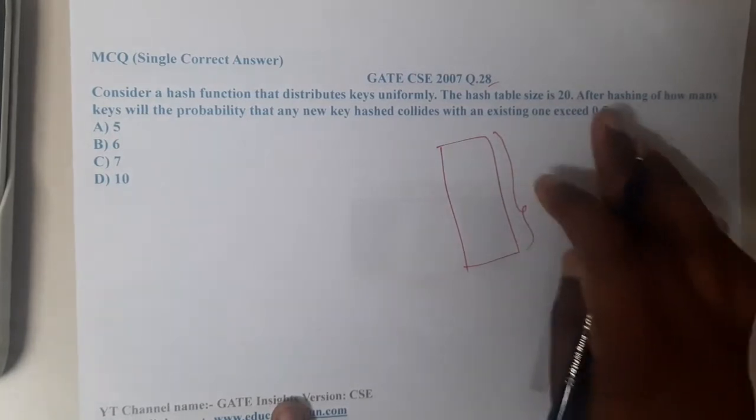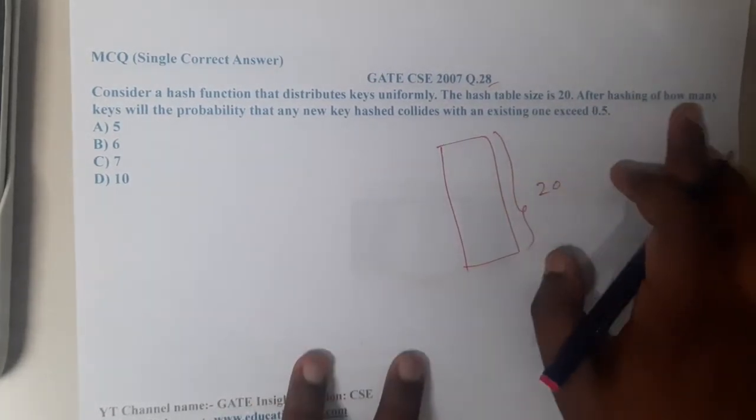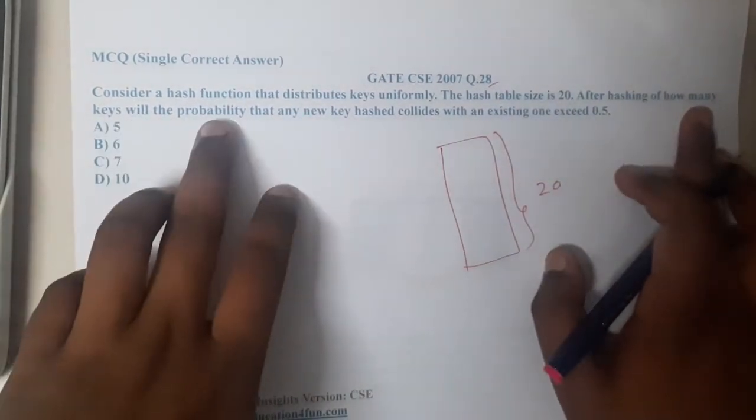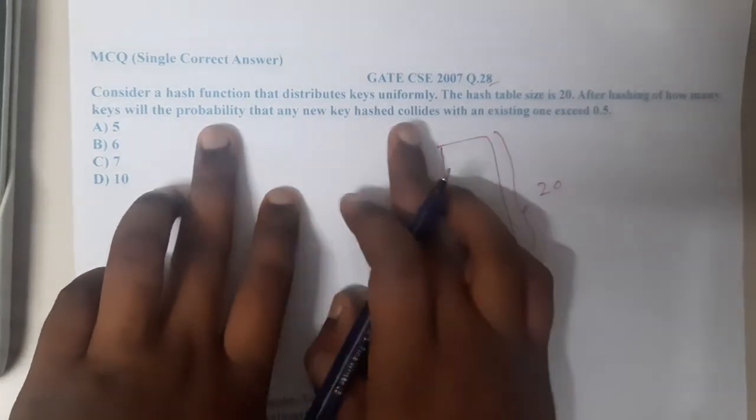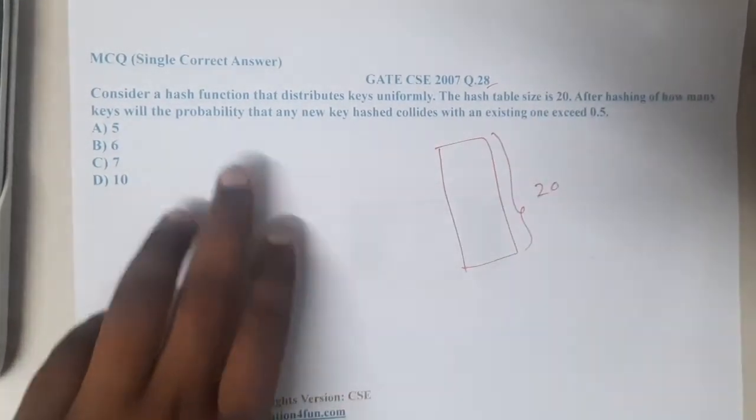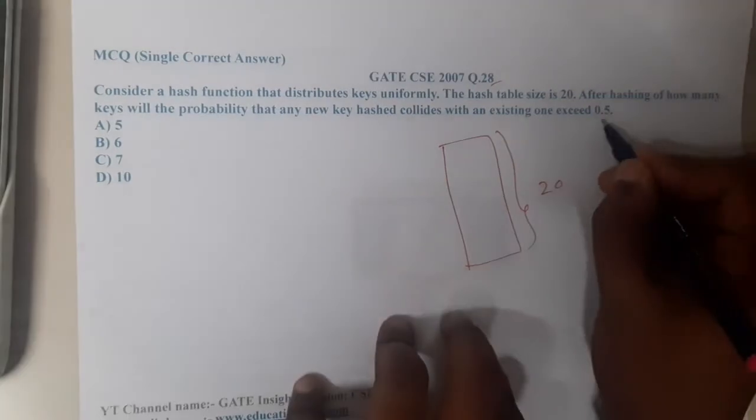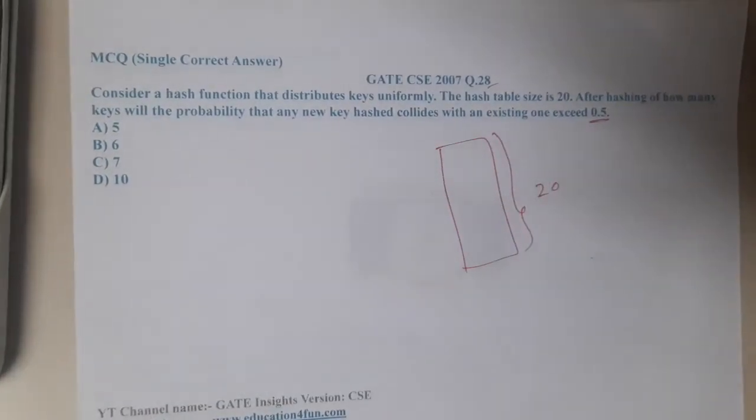So there are in total 20 slots. After hashing how many keys will the probability that a new key collides with an existing key—the probability is 0.5.